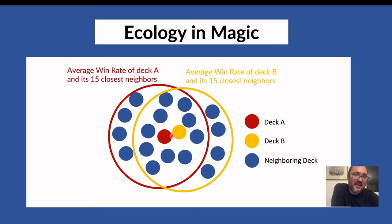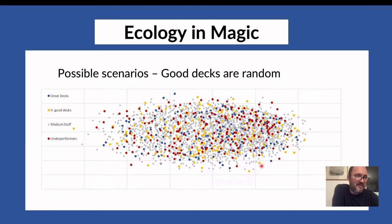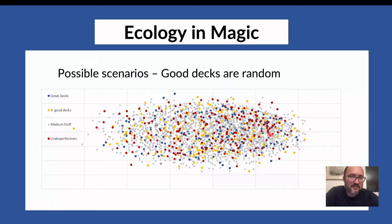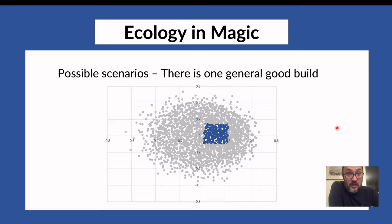Decks shared in common between the two circles have the same win rate and don't change the comparison. The difference comes mainly from those further-related decks. You can do this easily for all decks on the plot. One possible scenario is that win rate is randomly distributed, meaning performance has no link to composition — basically luck dominates. Another is that there is one consensus good build in the middle and the rest are much worse. Another, which I think is most likely, is that there are several distinct good builds.